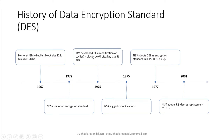In 1975, IBM developed DES, which is a modification of Lucifer. It had a block size of 64-bit and key size of 56-bits. In the same year, the NSA suggested some modifications, and in 1977 NBS adopted DES as the encryption standard. In 2001, NIST adopted Rijndael as a replacement to DES, which was renamed as AES, which we will discuss in the coming session.